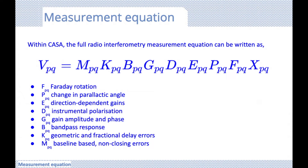The full RIME consists of quite a number of matrices describing the impact and order of the distortions. The lettering for these matrices follows a convention: the G matrix stands for gain, B is bandpass, D is commonly used for polarization leakage, and F for Faraday rotation. Let's go through them individually and define the most important matrices in this equation.